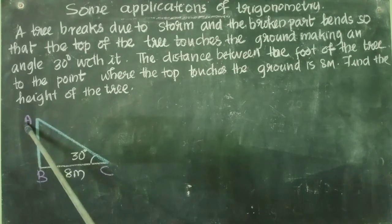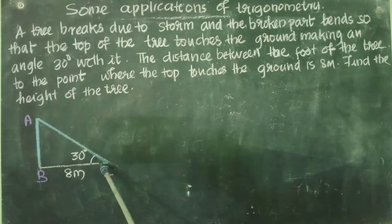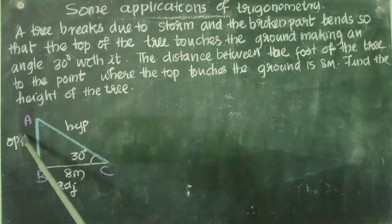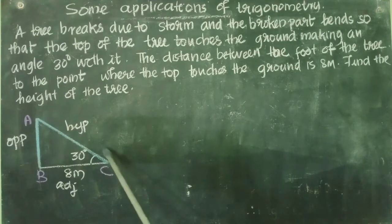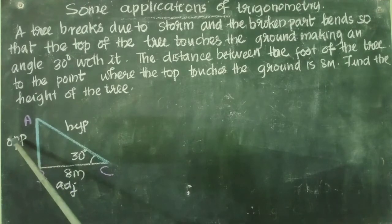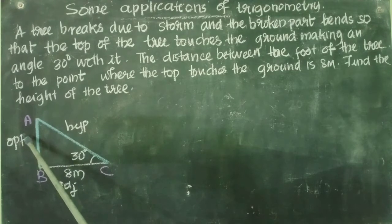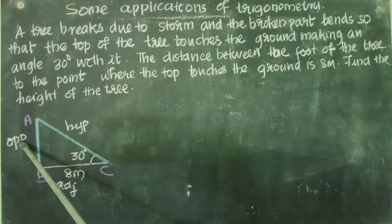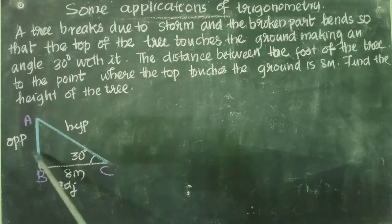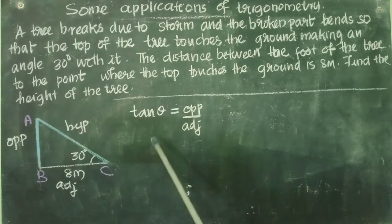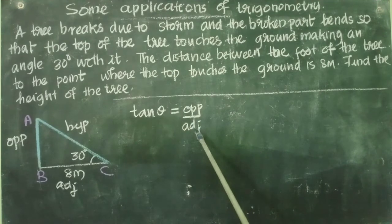We need to find out AB and AC. Here C is the acute angle. For this acute angle C, AB is the opposite side, AC is the hypotenuse, and BC is the adjacent side. We need to find out both the opposite side and hypotenuse. The adjacent side is given, so first let us find the opposite side. The ratio between the opposite side and adjacent side — we know tan θ = opposite side / adjacent side.